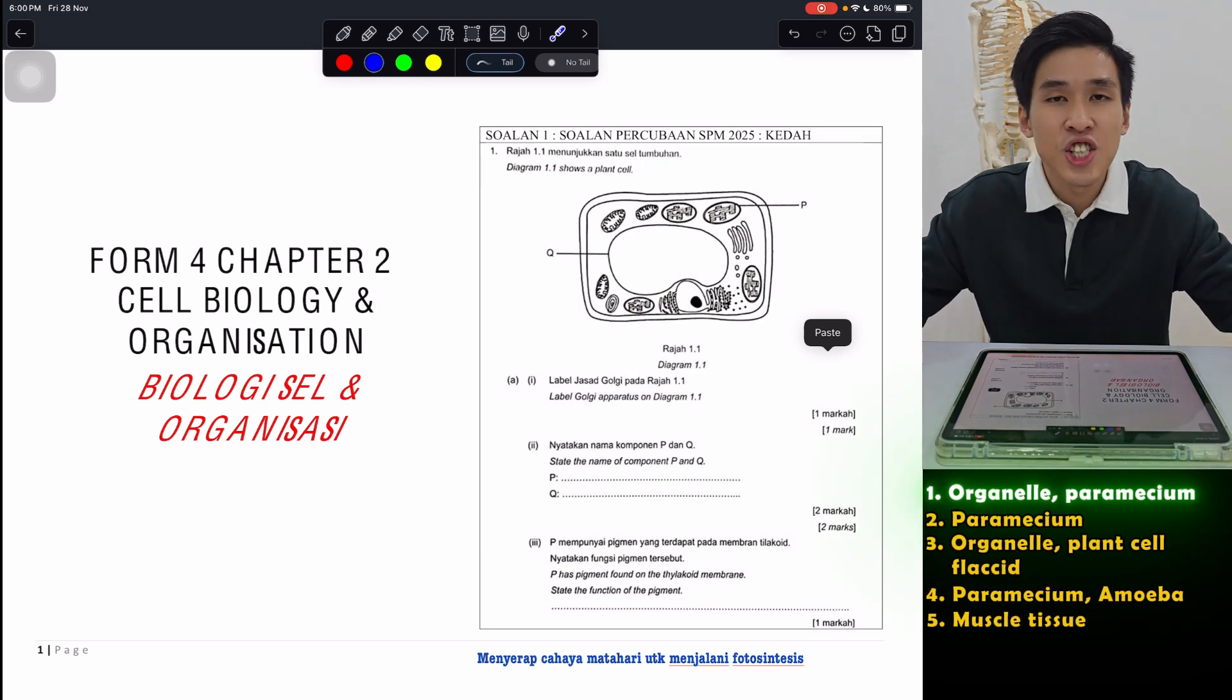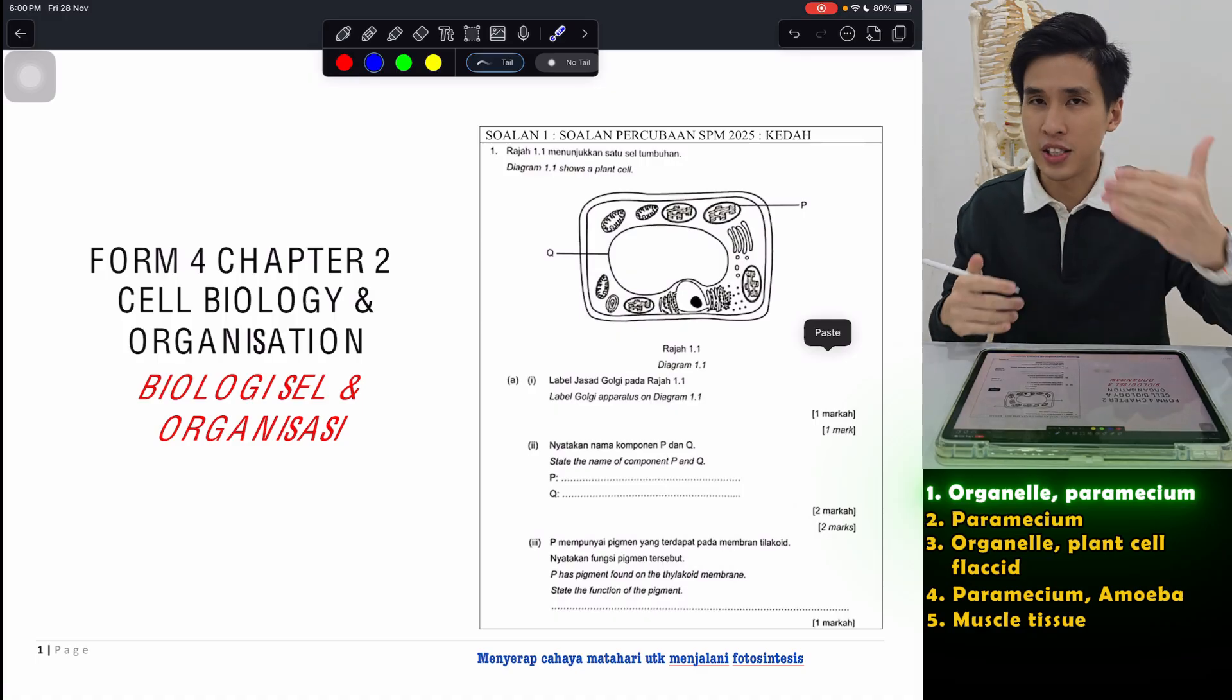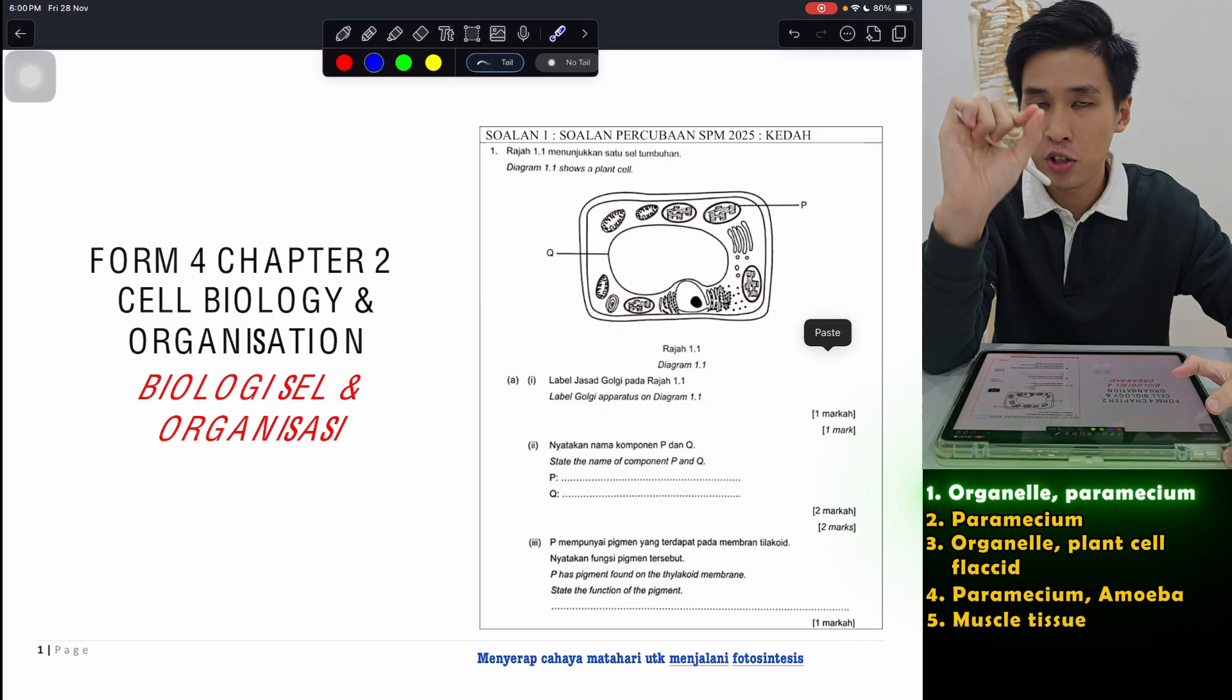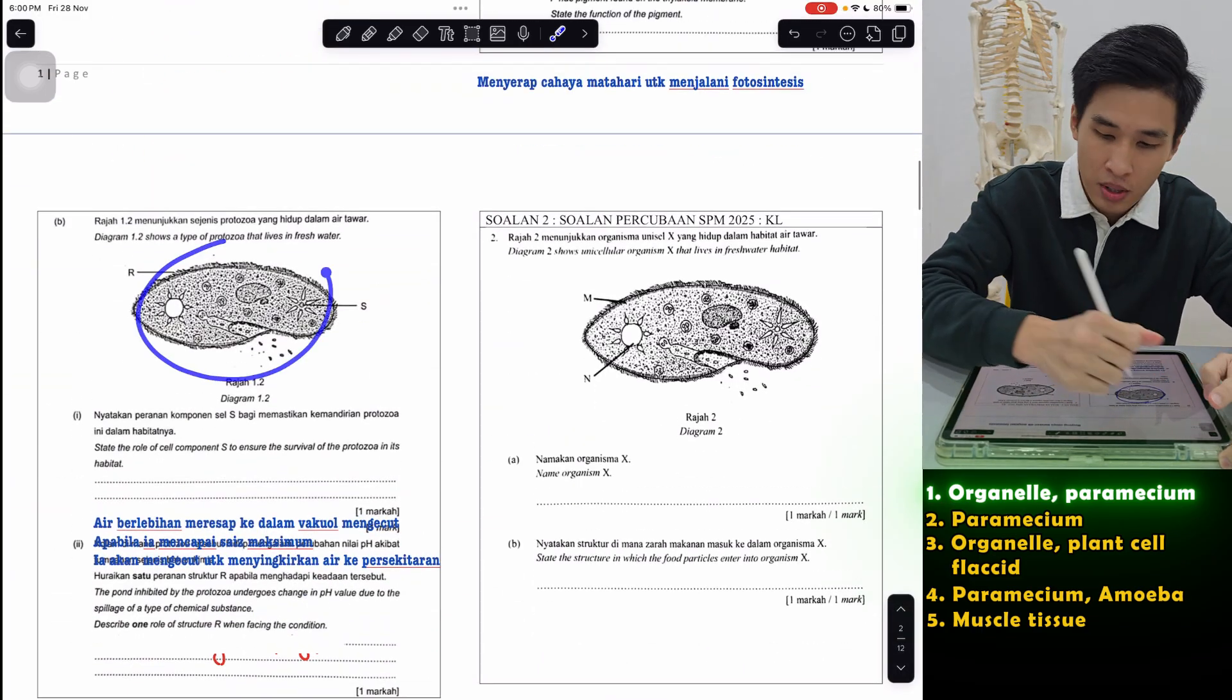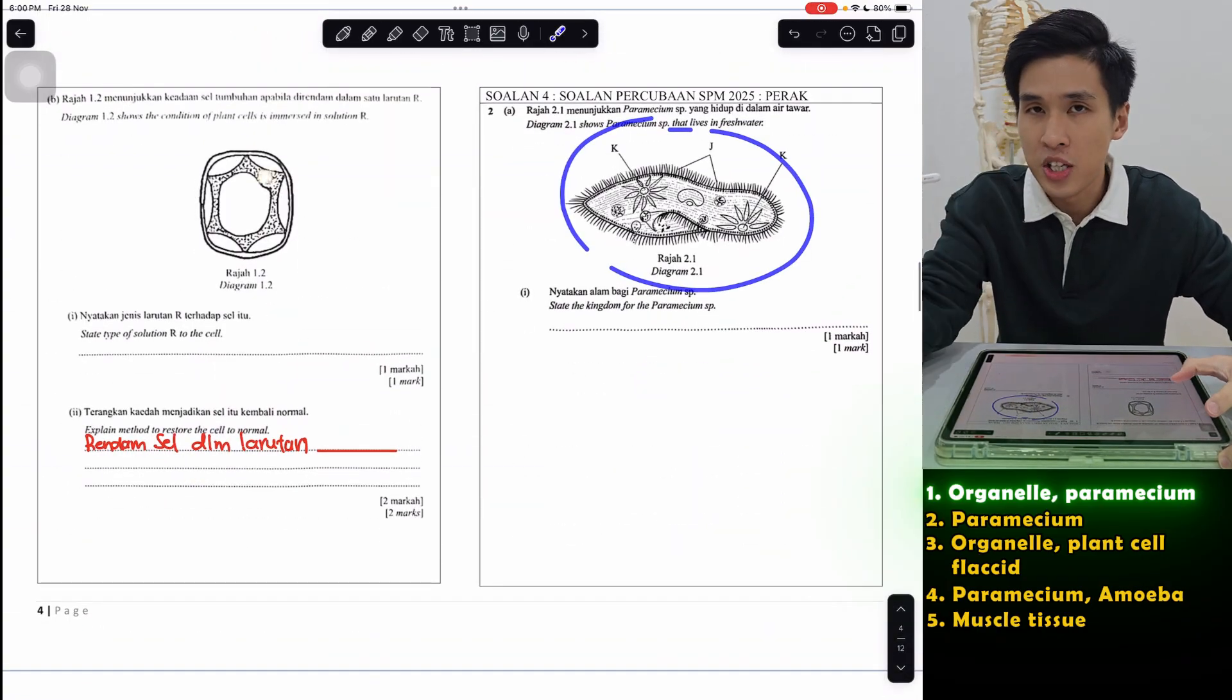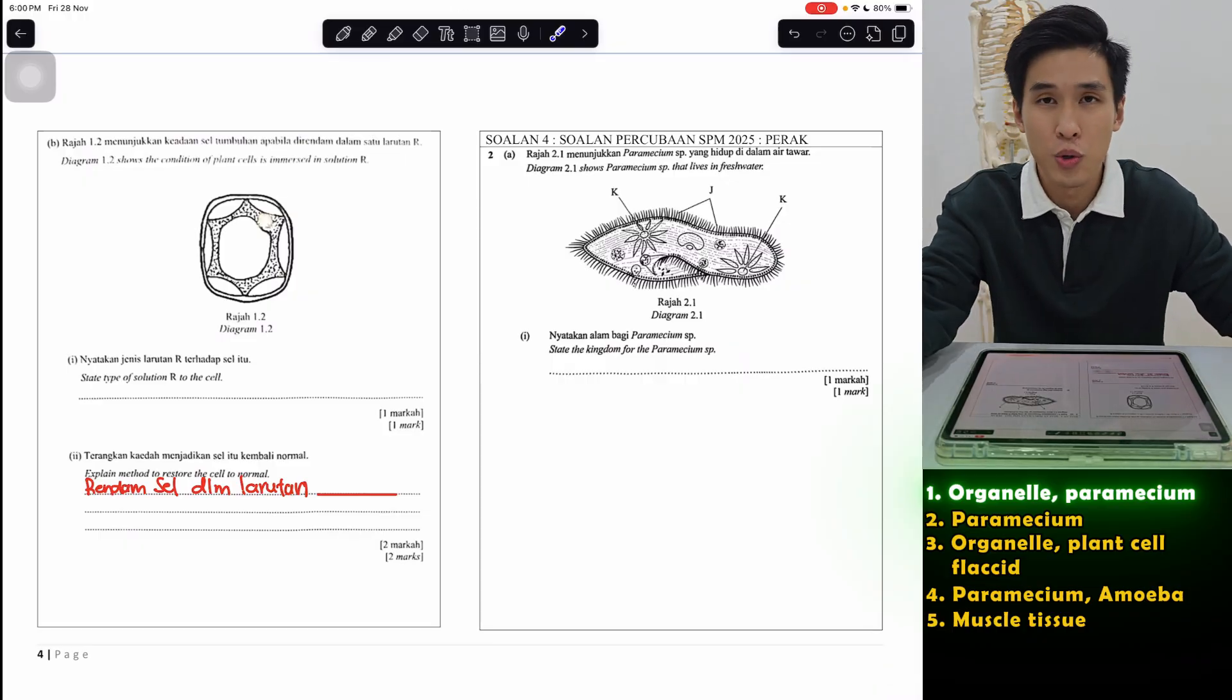So we start off our 2025 state trial series with the easiest chapter, Form 4 Chapter 2. Now even though it's easy, it's still your basic, so it's a good practice. Now I found out that this year, Punea, Form 4 Chapter 2 state trials, a lot of trials they ask about paramecium.